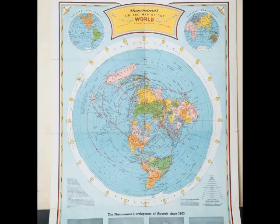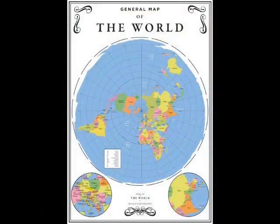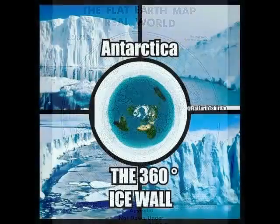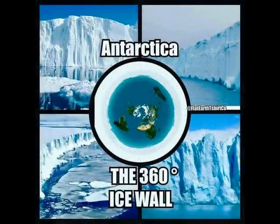Antarctica, instead of being an ice continent on the bottom of the globe, actually surrounds us 360 degrees. How far that ice goes outwards is unknown at this point. There's a cover-up — that's what the Antarctic Treaty is all about. That's why you can't independently explore Antarctica.